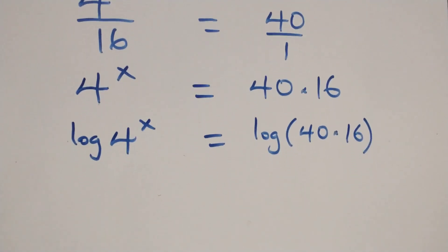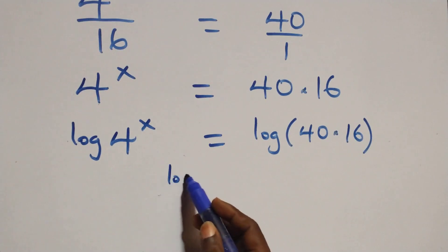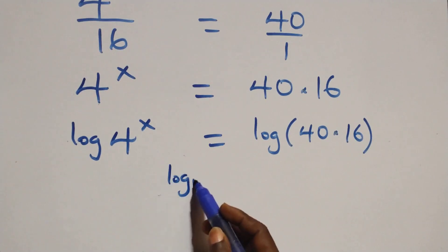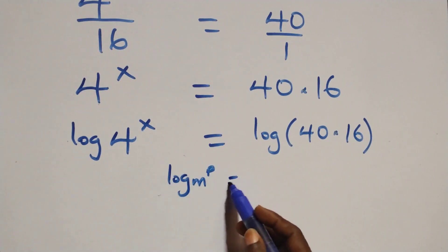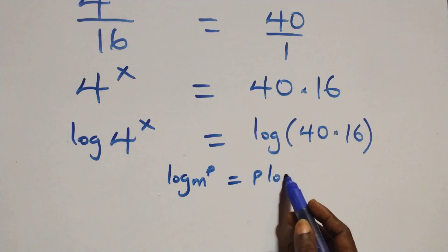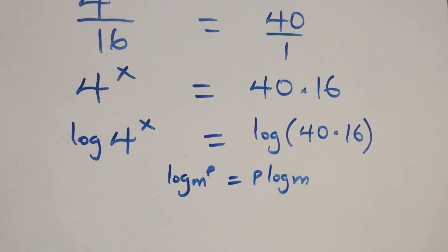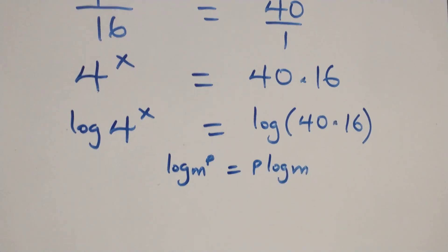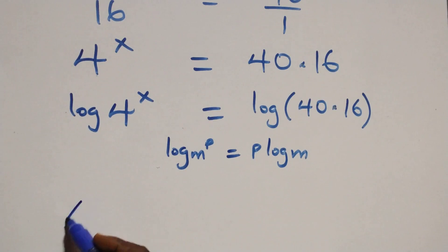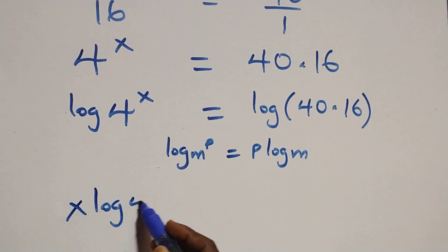Then here, we apply the power log rule. When we have log m raised to power p, this is the same thing as p times log m.